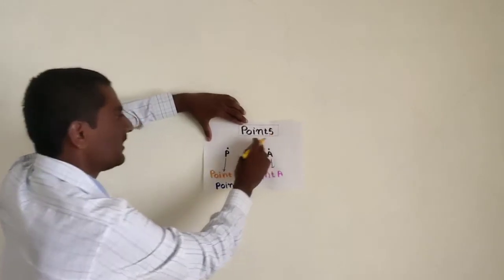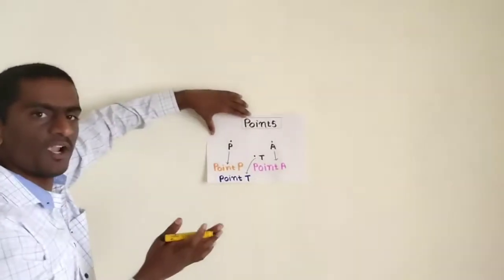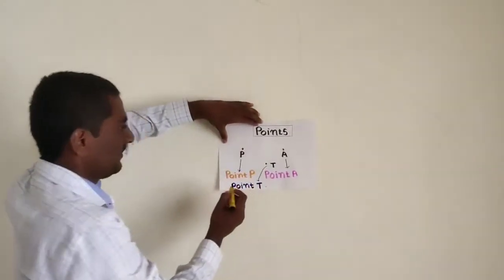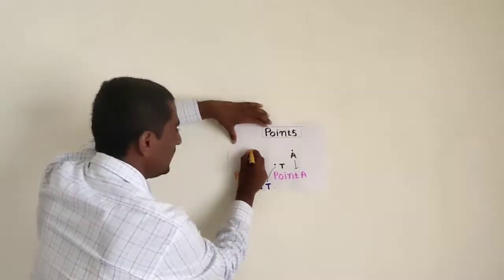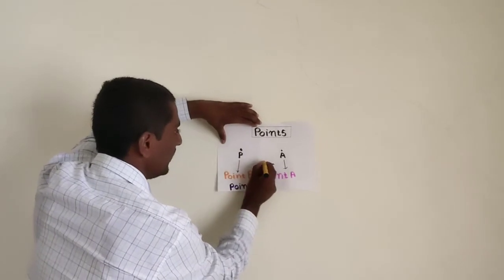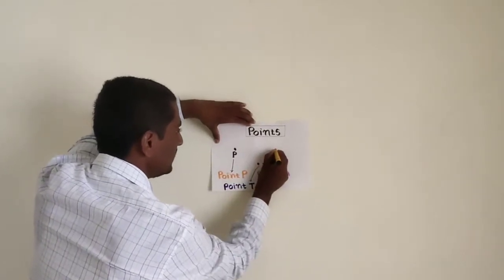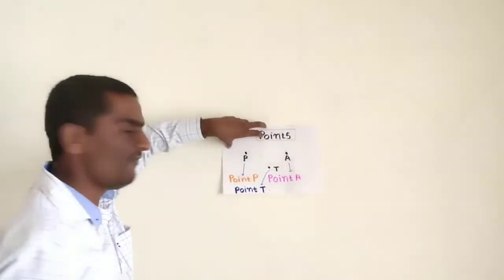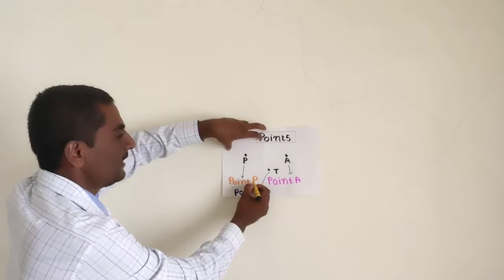First geometrical concept is point. What is point? Point is a teeny dot which is shown by a teeny dot. This is point. This is point. This is point. And remember that point is named with the help of capital letters.